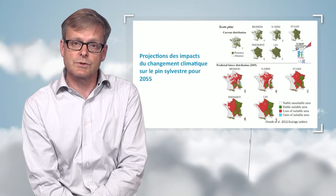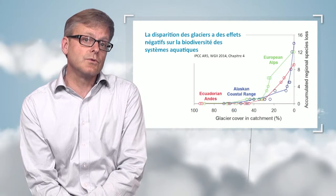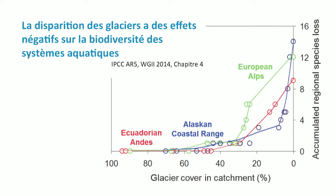We can also look at the impact on freshwater ecosystems, which are very sensitive to climate changes, especially in the mountains. We know that glaciers are shrinking. If they shrink just a little bit, this will increase the flow in the rivers. But if they shrink a lot, this ends up decreasing the flow in the rivers. This graph shows that if the watershed is no longer covered enough with glaciers, this decreases the specific biodiversity wealth of the rivers depending on those glaciers.